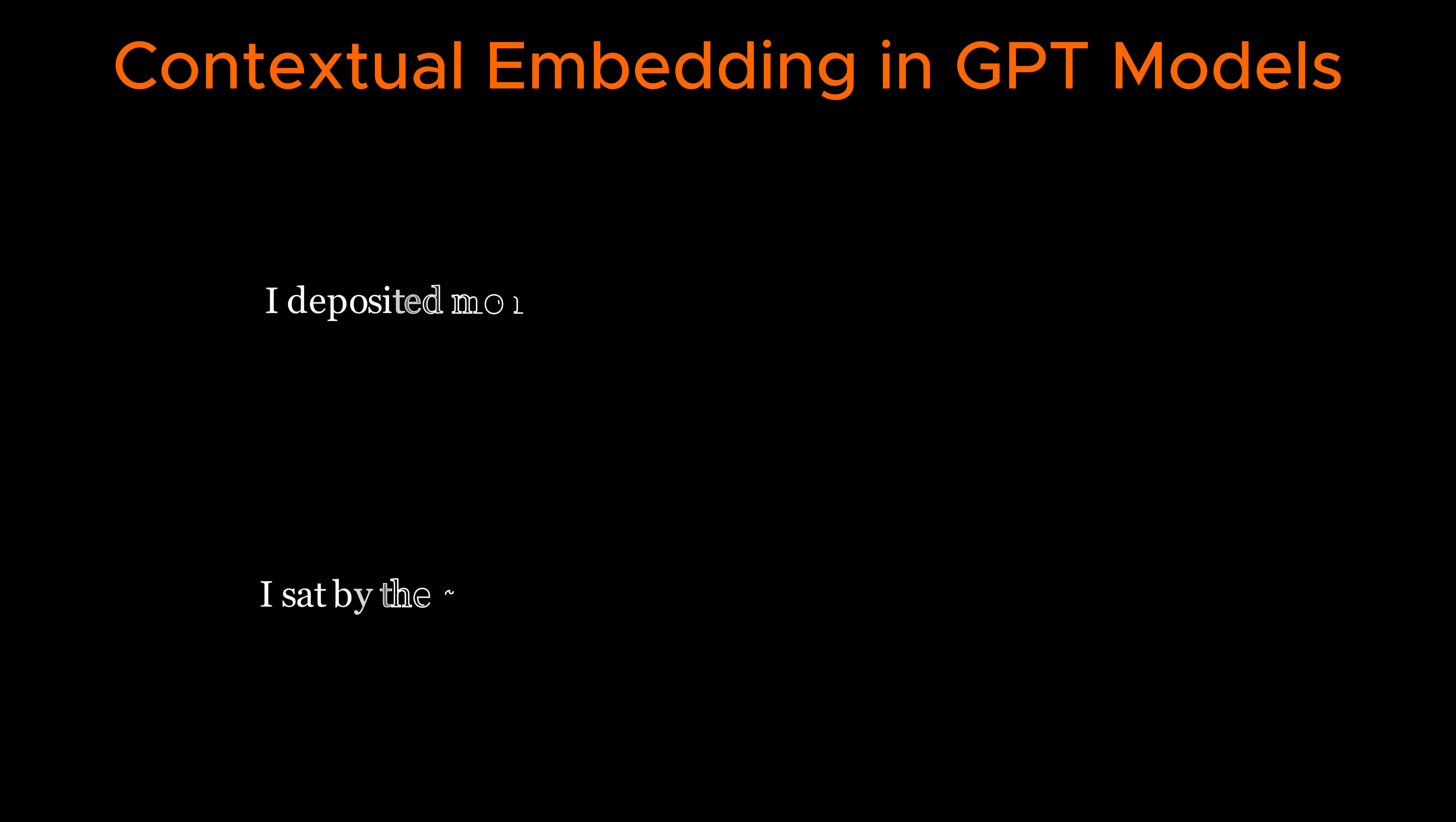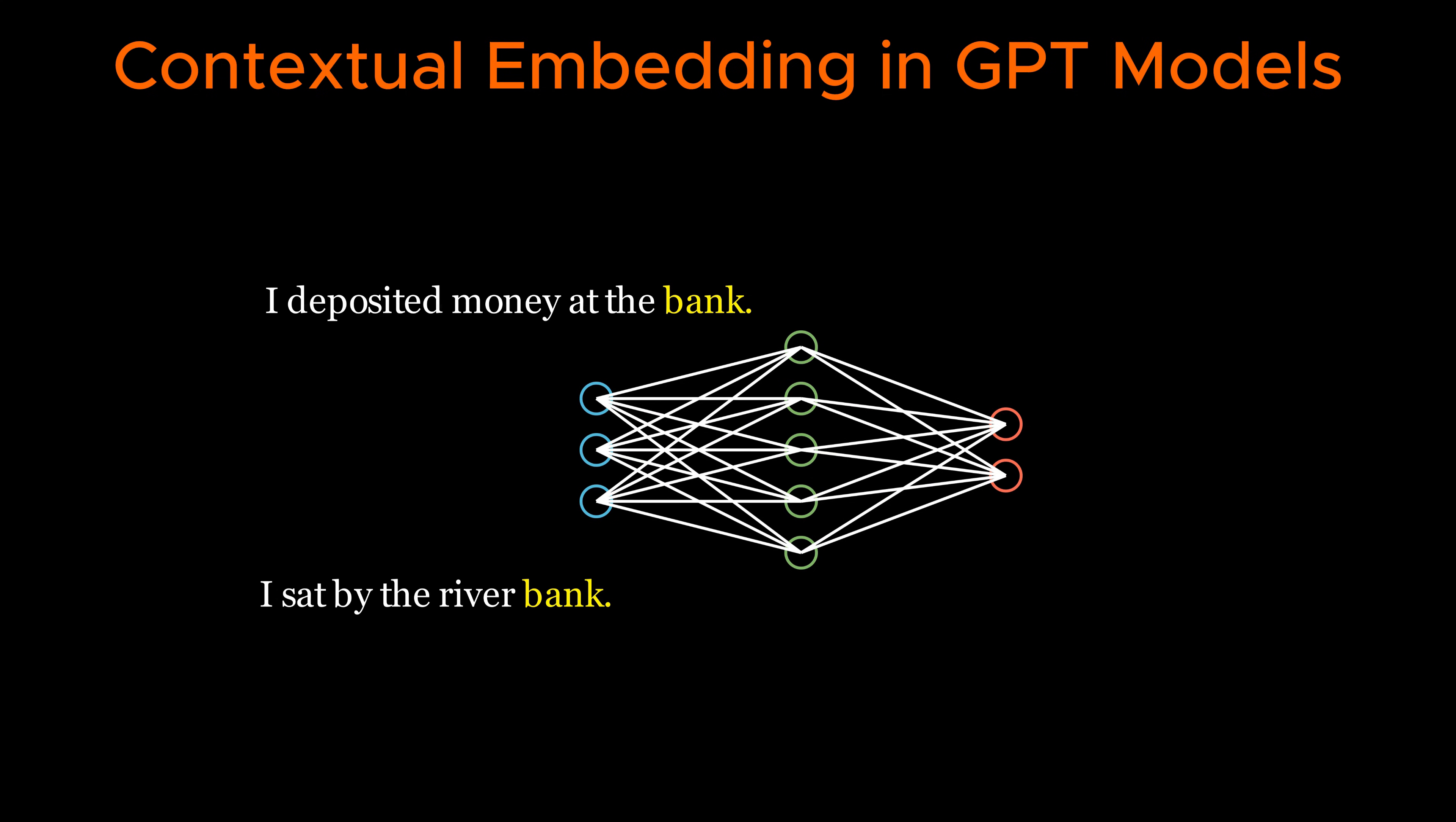Beyond individual words, models like GPT generate contextual embeddings, meaning that the same word can have different representations based on its sentence. For instance, the word 'bank' in 'I deposited money at the bank' represents a financial institution, whereas in 'I sat by the riverbank' it refers to a geographical location.